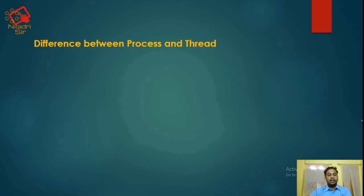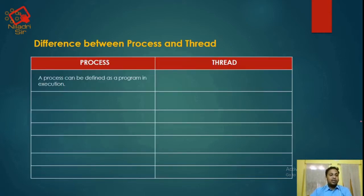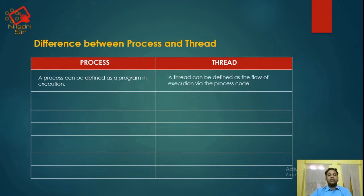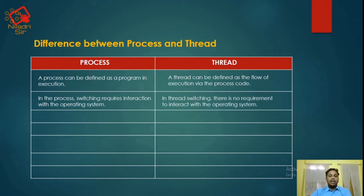What is the difference between a process and a thread? A process can be defined as a program in execution — basically a program stored in secondary memory that is in an executable state. A thread is defined as the flow of execution via the process code. In process switching, interaction with the operating system is required, but in thread switching, there is no such requirement.